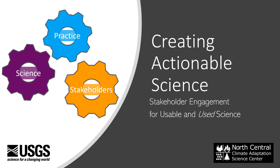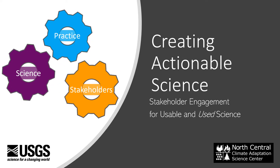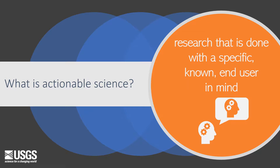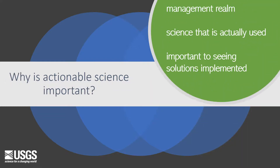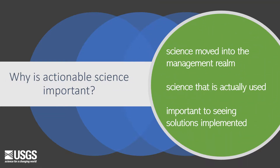This short video provides an overview of stakeholder engagement for creating actionable science. Actionable science is research that is done with a specific, known end user in mind. It allows science to be more quickly moved into the decision-making realm. It strives to connect the dots between usable science and science that is actually used, and is important not only to finding solutions to complex climate-related adaptation issues, but also to seeing those solutions implemented.